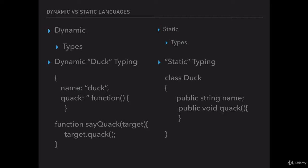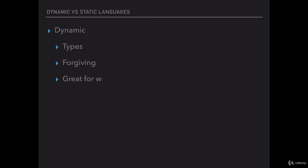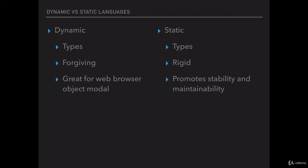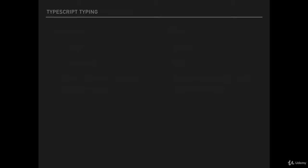Statically typed languages, on the other hand, are much more rigid. They aim to catch development errors before the code is even executed, and they do this by imposing restrictions on how you can interact with objects, forcing you to clearly specify everything about the object you're going to interact with. In the static typing world, you can't just call a quack method on any object — you first need to explicitly define a type that has a quack method, its parameters, and the return value.